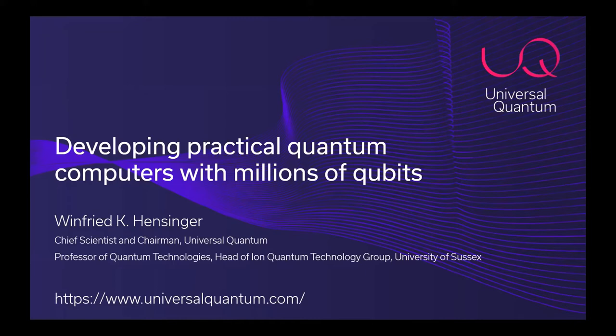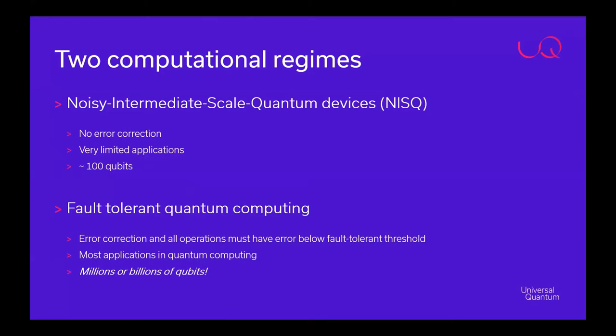I'm going to tell you about the work within Universal Quantum to build practical quantum computers. In quantum computing there are two computational regimes: one referred to as NISQ, where you don't correct for the inherent errors in operations, and the other — fault-tolerant quantum computing — where you correct for those errors. Most applications you've heard of in quantum computing actually belong to the fault-tolerant regime.